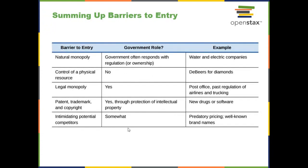Summing up some of these barriers to entry: you can have a natural monopoly, control of a physical resource, a legal monopoly — a subset of which are patents, trademarks, and copyrights — or you can intimidate potential competitors.